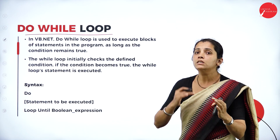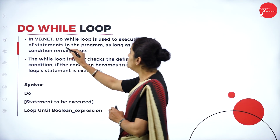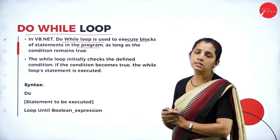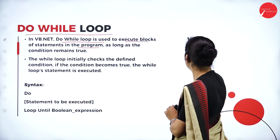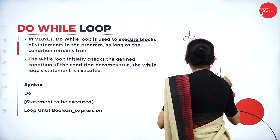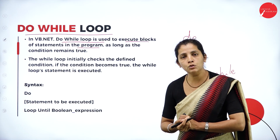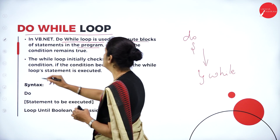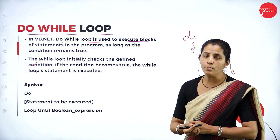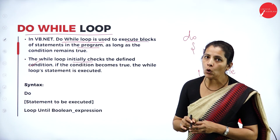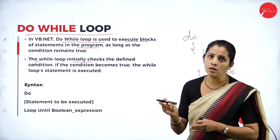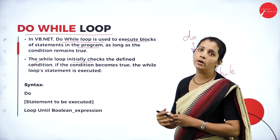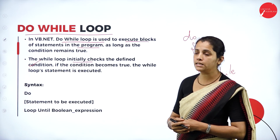What is a do while loop? Do a certain task and check the condition at the end. The do while loop is used to execute a block of statements in the program as long as the condition remains true. Even though the condition is false, it can execute at least one time. The while loop initially checks the condition at the beginning — it is called an entry control or pre-testing loop. Whereas in do while, the condition is checked at the end — so it is called an exit control or post-testing looping statement.